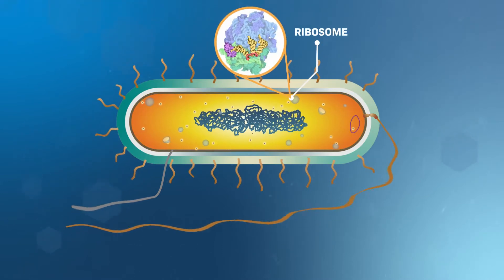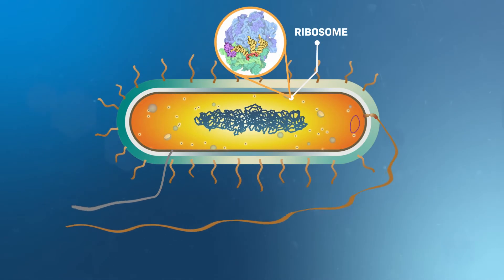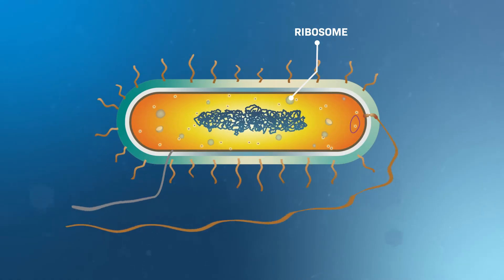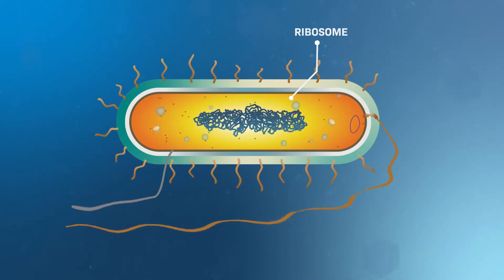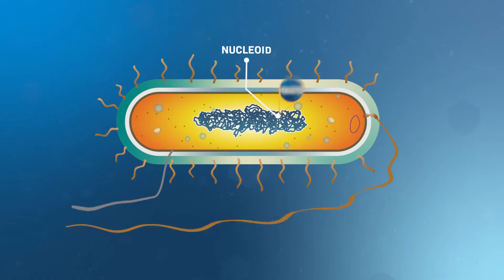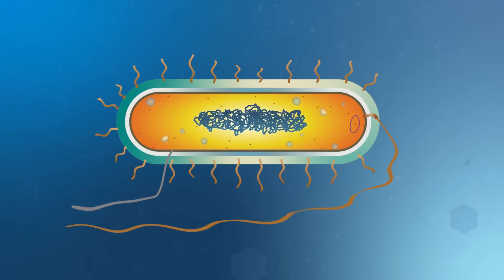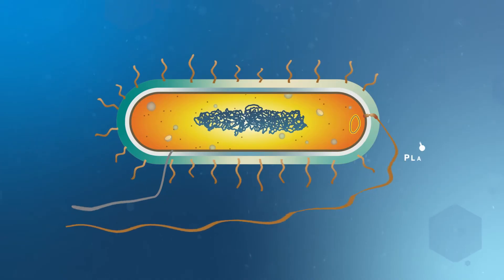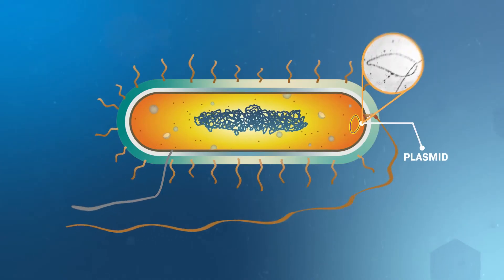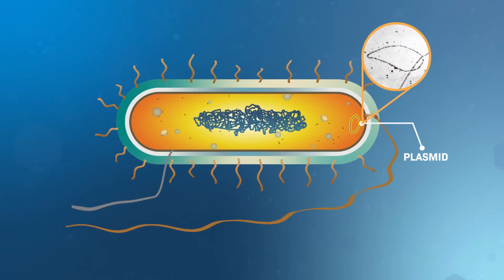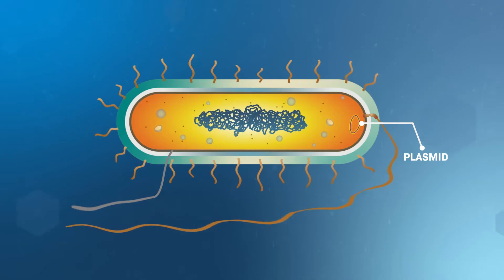Ribosomes are found throughout the cytosol, ready to process the information contained in the DNA and the RNA to make proteins. All bacteria have a nucleoid where the DNA is concentrated. Some bacteria have additional circular pieces of DNA called plasmids, with genes that confer specialized functions.